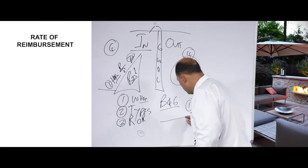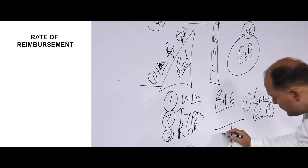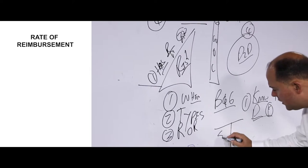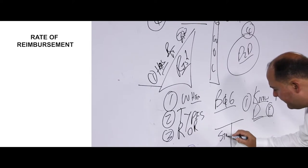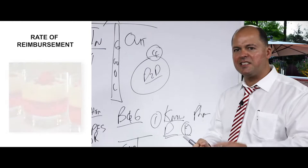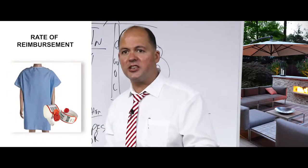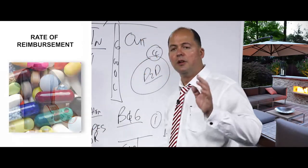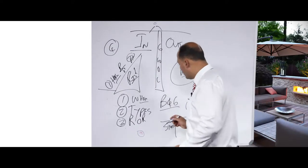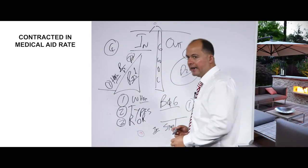In hospital there are also two sides. The first is the physical stuff — the custard, jelly, bangle, gown, drips, medication, injections, scalpel, bedding, and food. That will always be covered at the contracted-in medical aid rate.